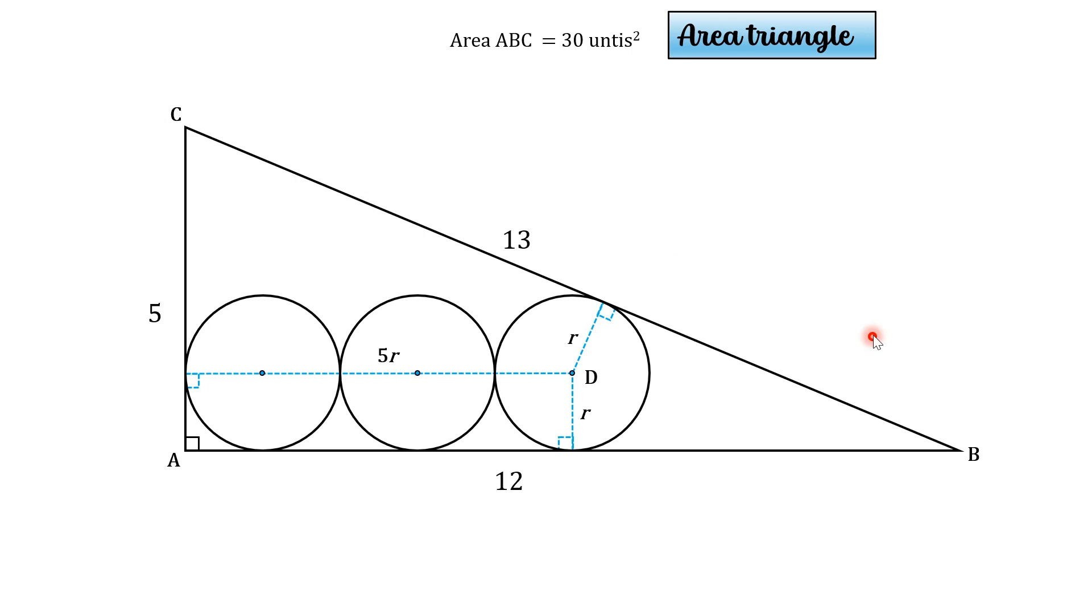Now the reason why we need the area of the large triangle is because we can divide the triangle into three separate triangles using point D as a reference, and equate the sum of the areas of three triangles to that of the larger triangle. So we can construct lines DC, DA, and DB, and this sets up the following. The area of ABC is equal to the sum of the area of CDB plus the area of CDA plus the area of ADB.